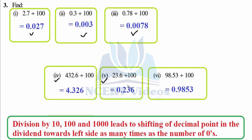Had it been multiplication then we would have moved towards the right hand side. Now 9853: 2 shifts from this position — so 1, 2 — answer is 0.9853. That's the third question.